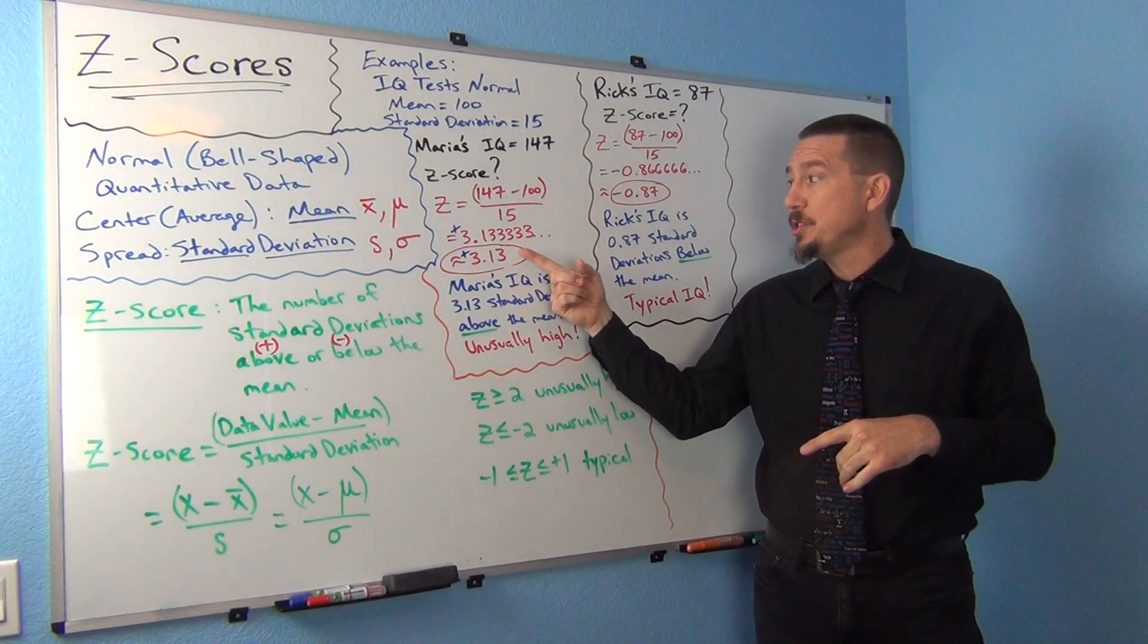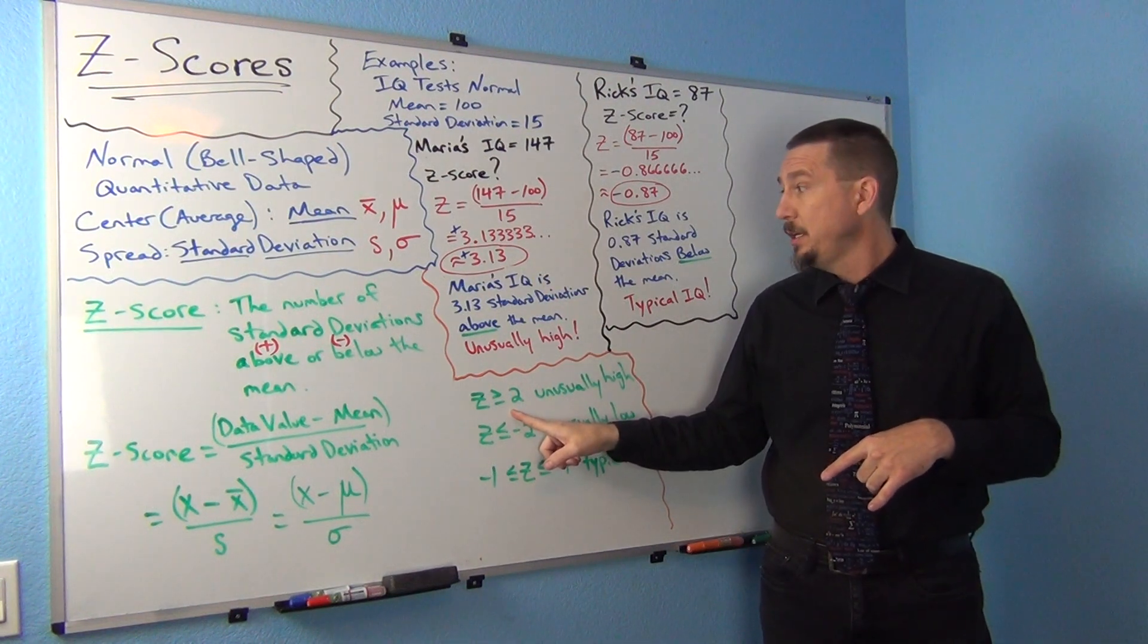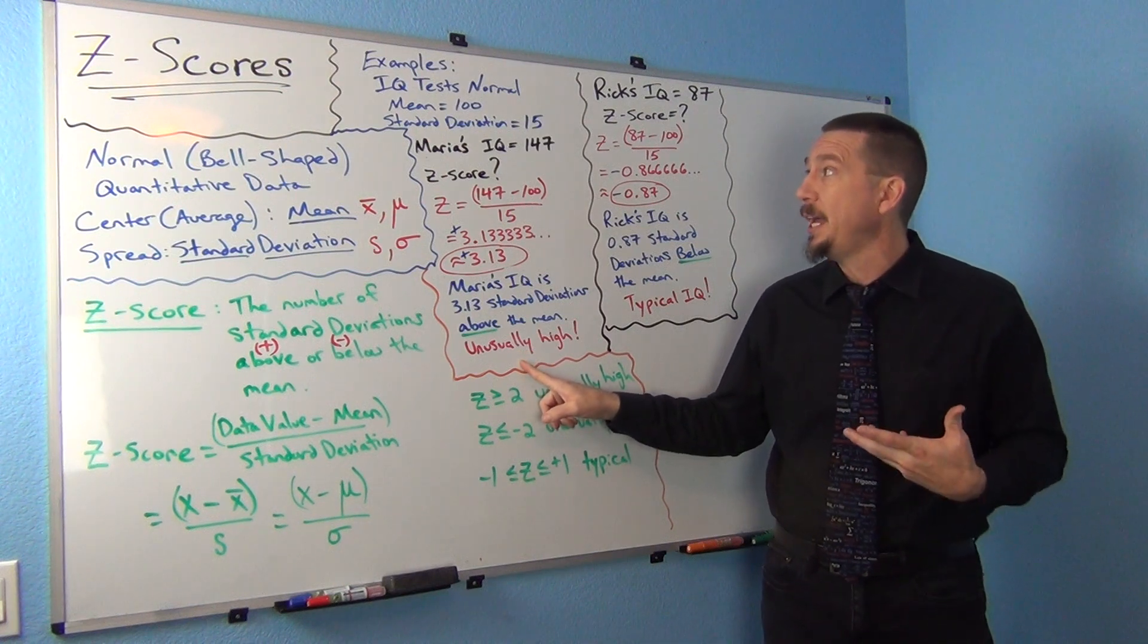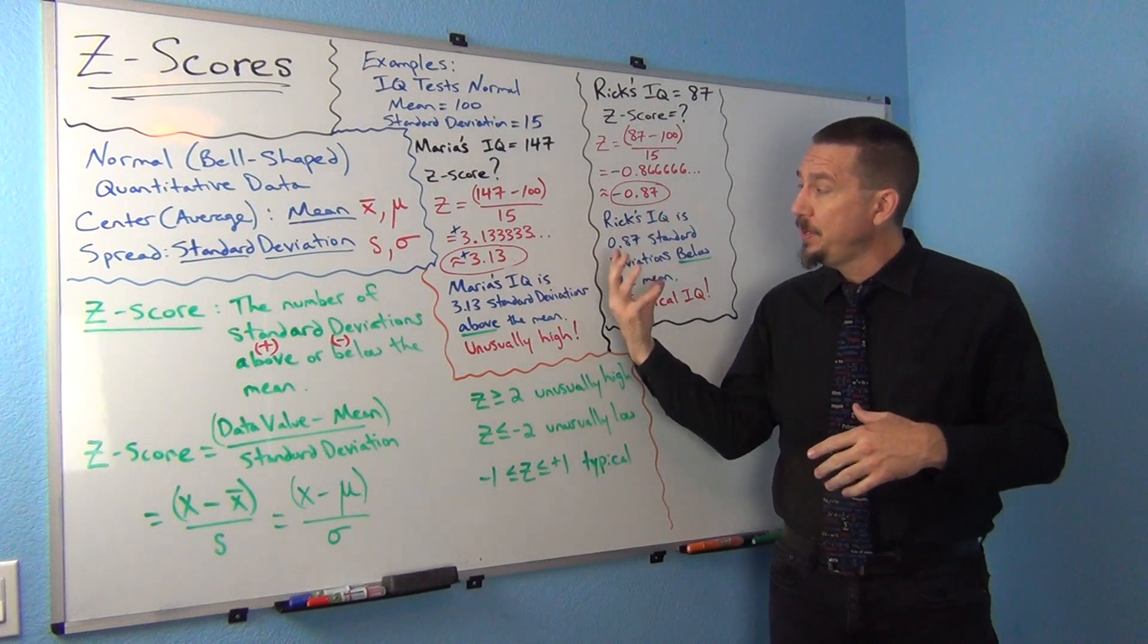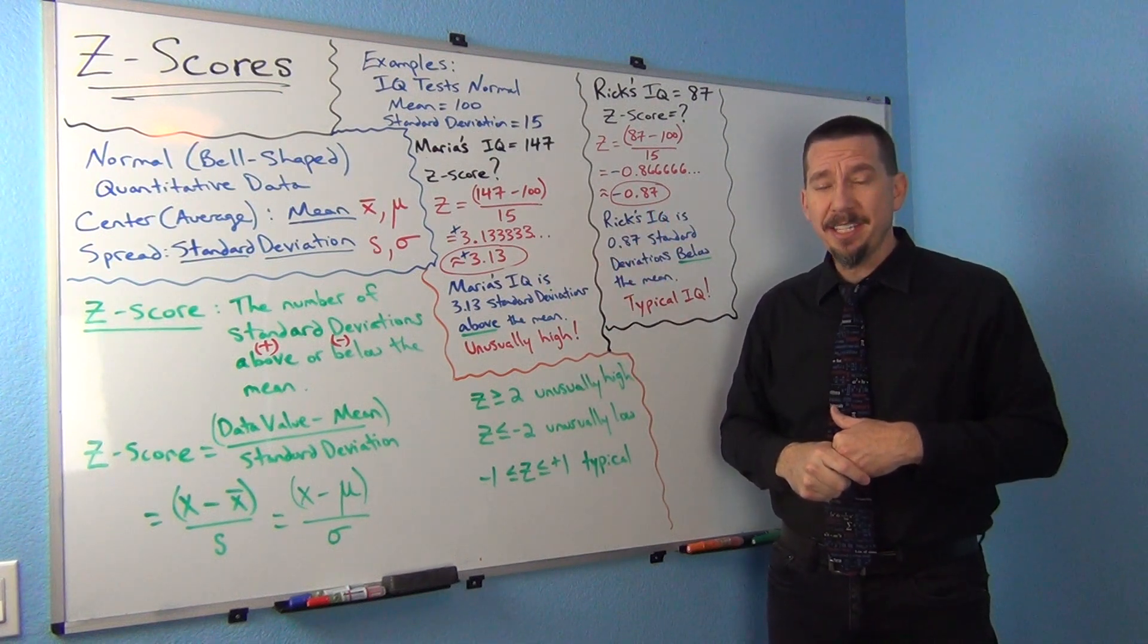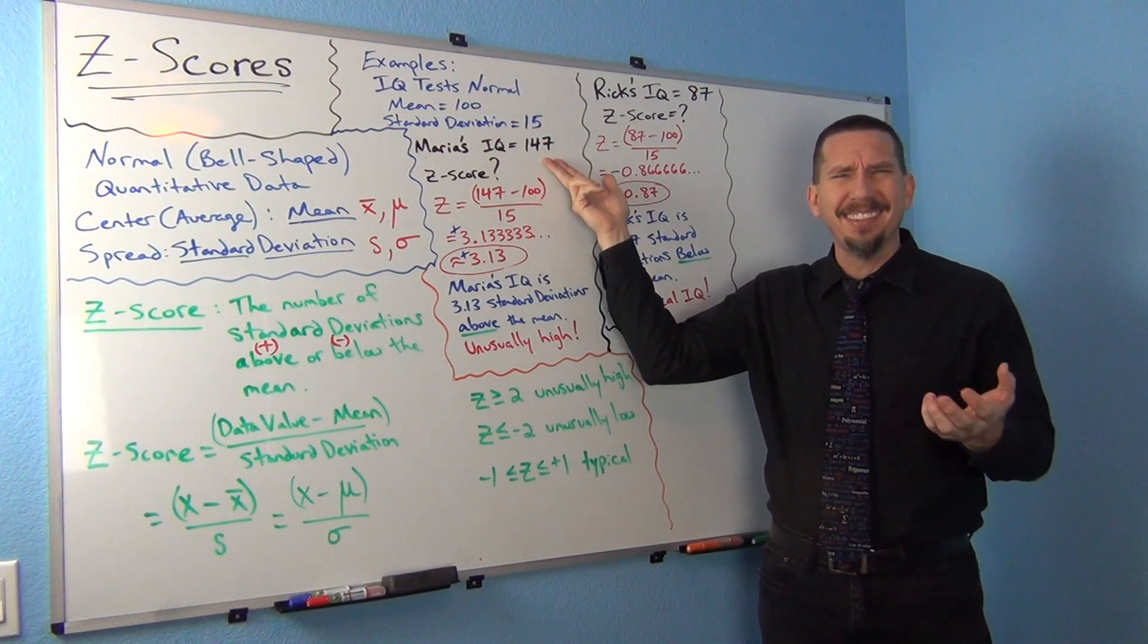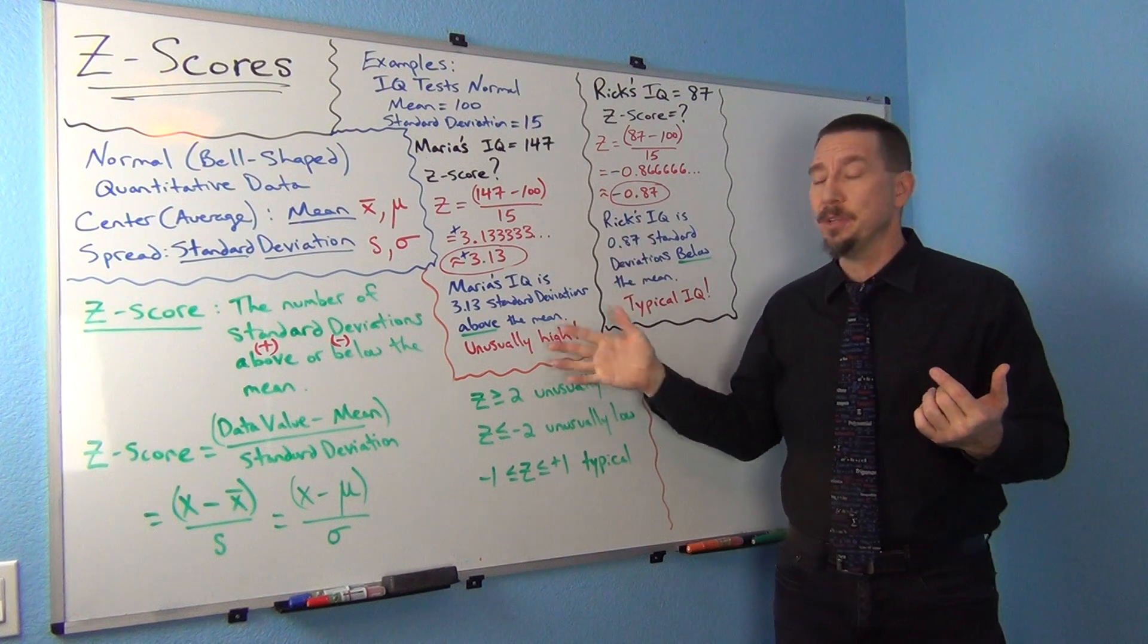So let's go back to Maria. Maria's Z-score was 3.13, which is definitely higher than two. So that means she was unusually high. Maria has an unusually high IQ because her Z-score was above two. Does that make sense? Like you might not understand, when I looked at 147, I didn't know, is that a lot or is that not a lot? Now I know it's a lot because the Z-score tells me.